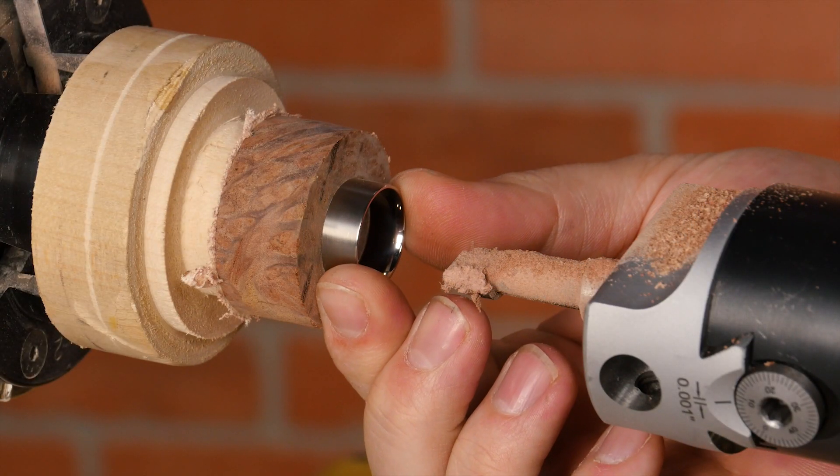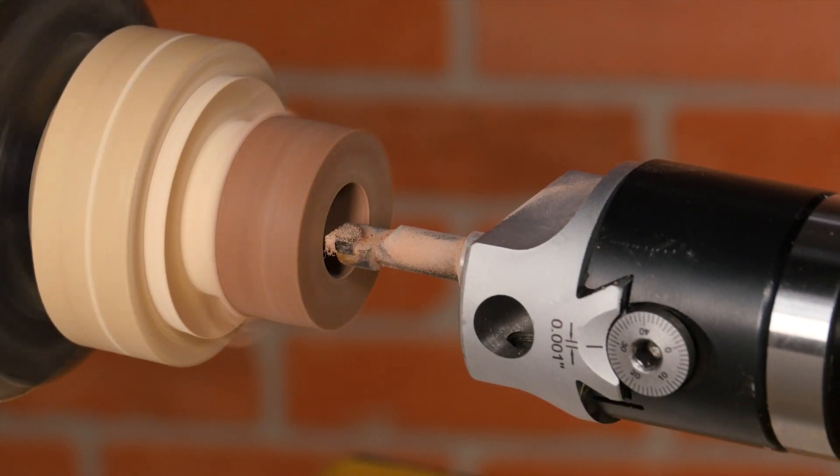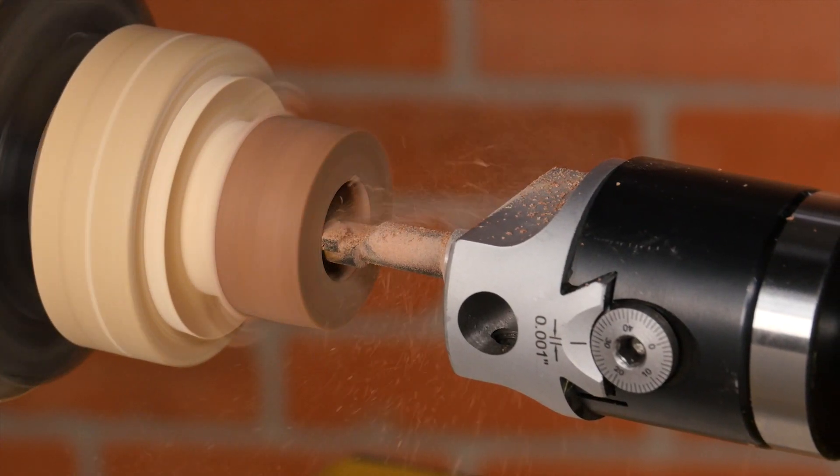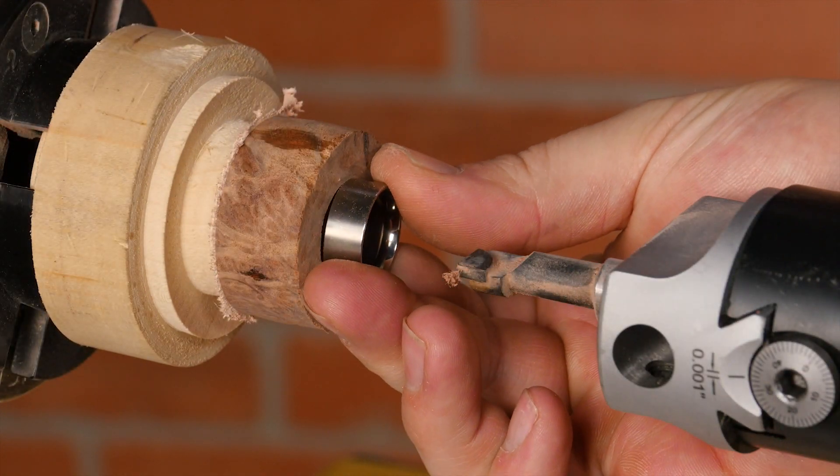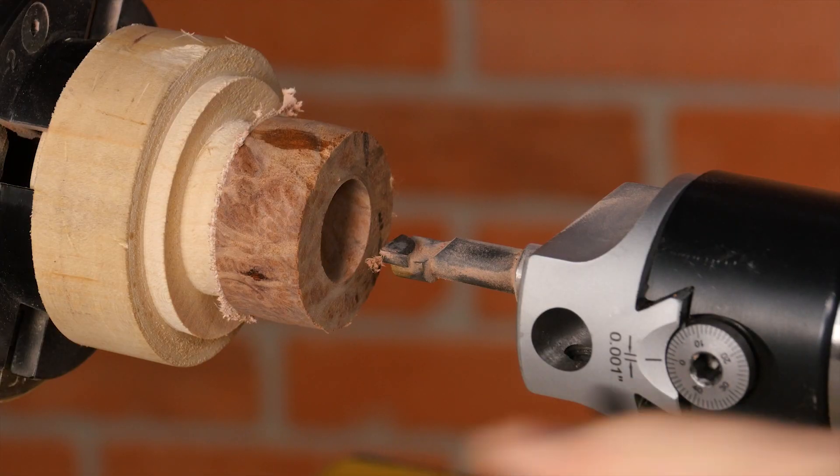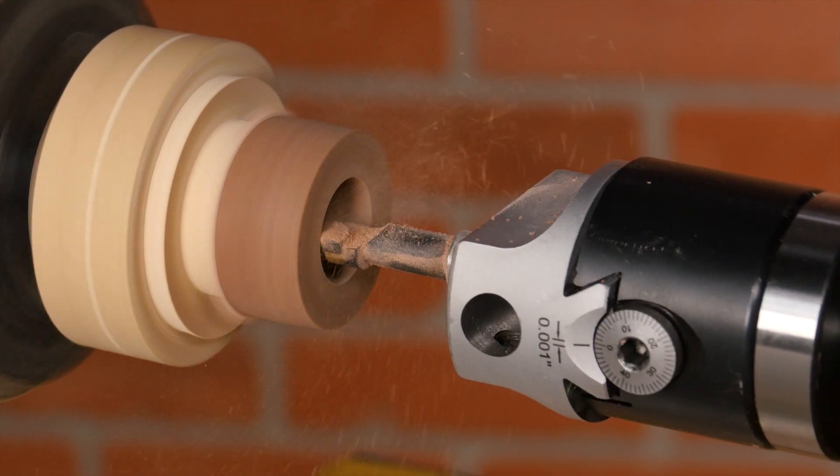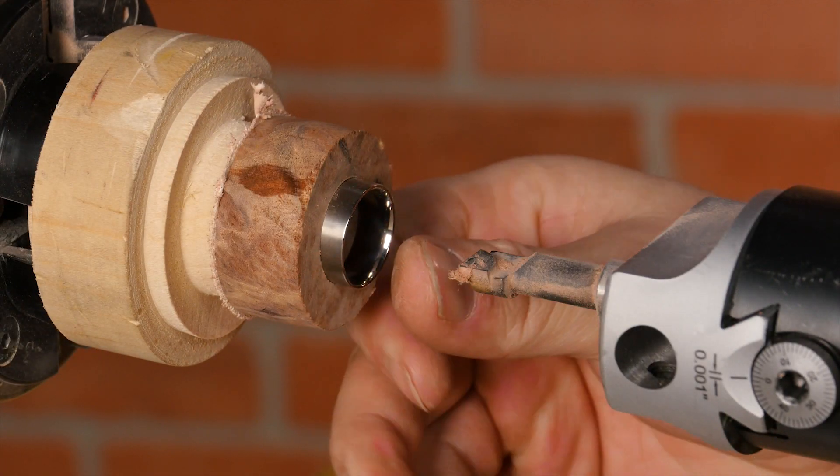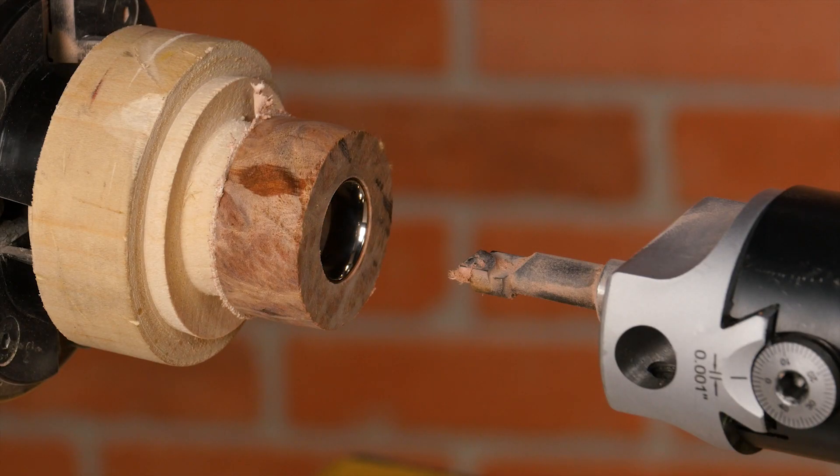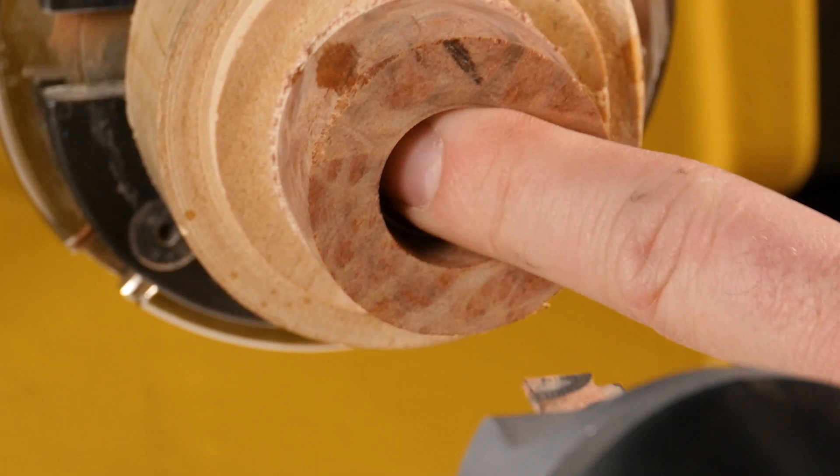Stop the lathe and check your fit. This is where the ring boring head really comes in handy. First, it guarantees a perfectly straight cut. Second, the boring head allows you to sneak up on the fit with extreme precision. Keep removing small amounts of blank material and test the fit frequently until the ring core fits.